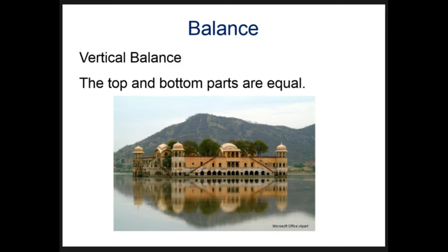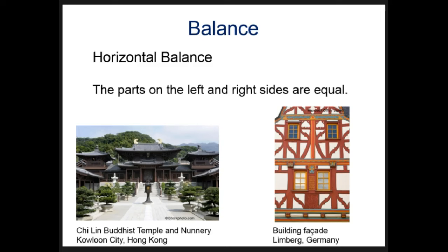We can also have vertical balance. When we talk about vertical balance, the top half and the bottom half are equal, so the line of symmetry is actually horizontal. This can be a little confusing when looking at the names. For example, this lake was designed so that we get vertical balance because the scene is reflected in the water.